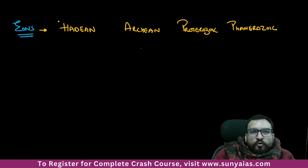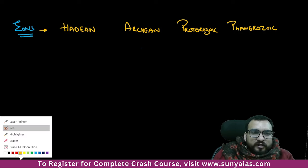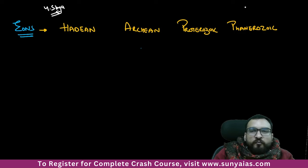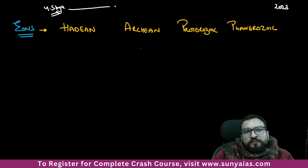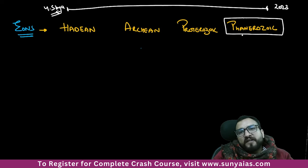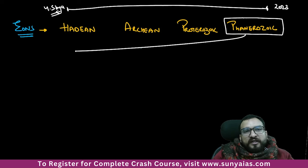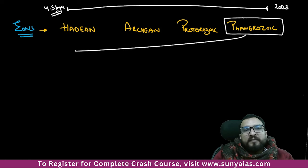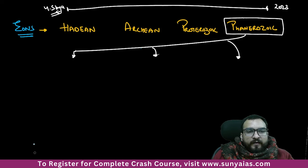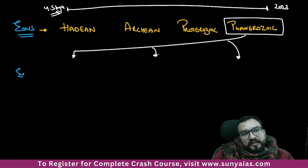Geologists have divided the entire history of the earth from 4.5 billion years ago to 2023 into these greatest chunks — the eons. We are living in the Phanerozoic eon. Now, every eon has certain eras. I am concerned only with the Phanerozoic eon — I should know how many eras we have under Phanerozoic.